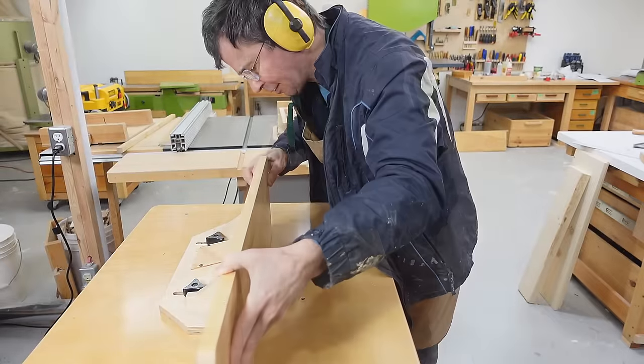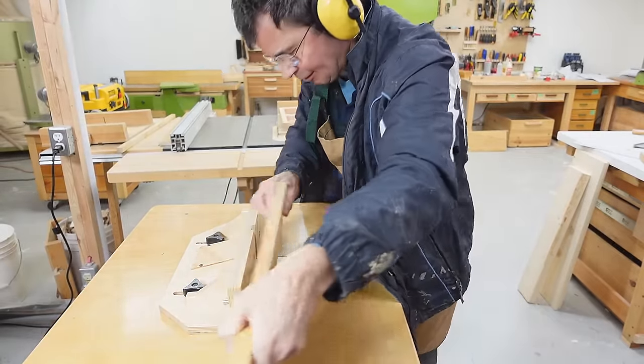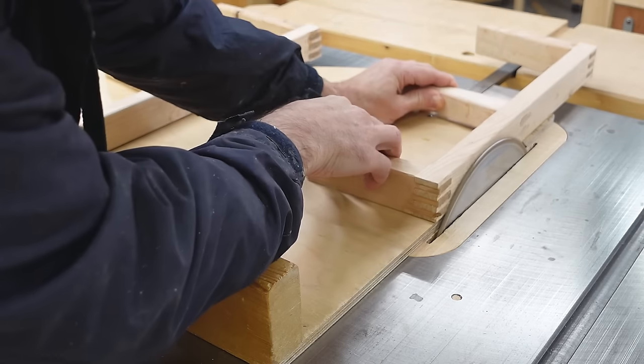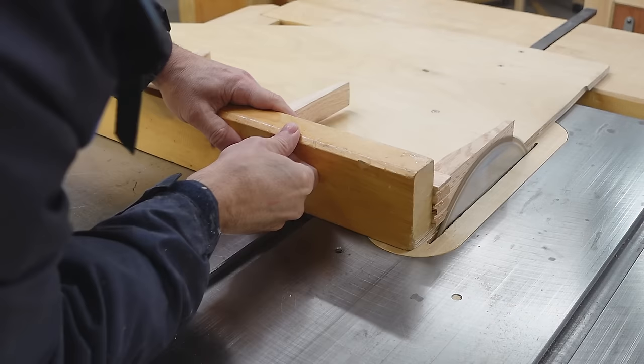Now I'm just gonna trim that edge trim flush. And also trimming some of that protruding joinery which works pretty good freehand on the table saw.